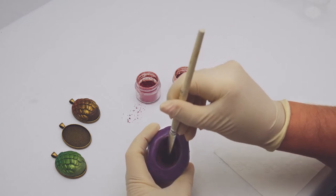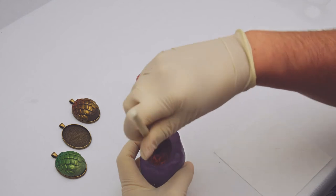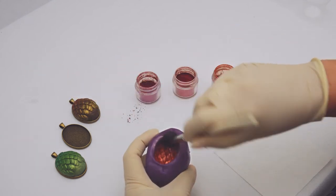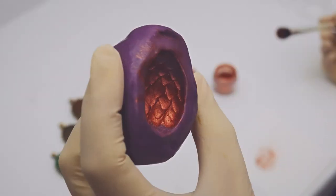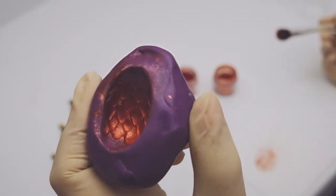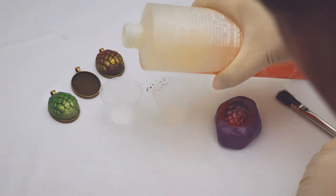Repeat with the third colour, blending them all together. Now dump the excess powder onto a piece of paper. Set the mould aside whilst you pour the resin.